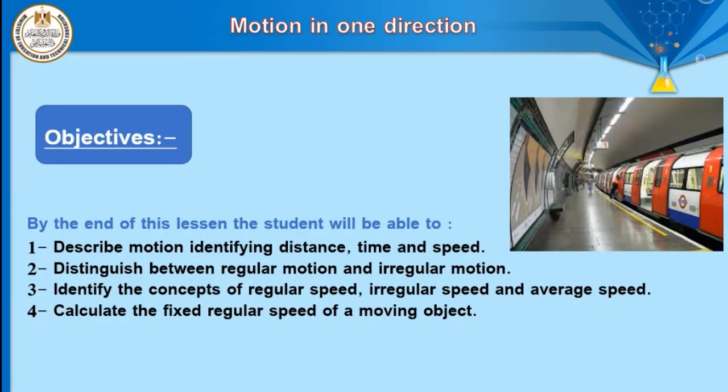What are the objectives of this lesson? First, we will describe motion and identify distance, time, and speed. We will distinguish between regular motion and irregular motion, and know some concepts such as regular speed, irregular speed, and average speed. Then we'll solve some problems about regular speed.